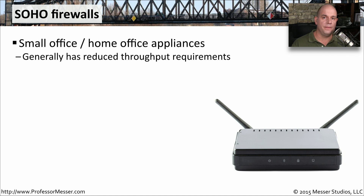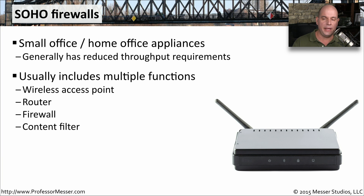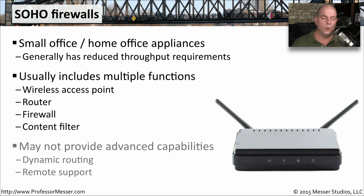In your small office or home office, you probably also have a firewall. These firewalls are usually smaller devices that don't have the same throughput requirements as larger enterprise devices, but they still provide a number of valuable security functions — they can be a wireless access point, provide routing, firewall all of your data, and may include enhanced content filters. What you may not get with these firewalls are things like dynamic routing protocol support or the ability to access the device remotely.